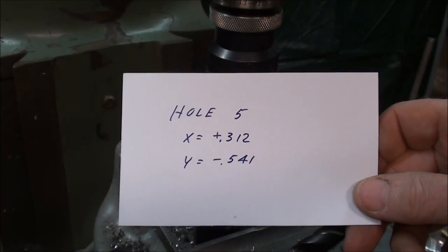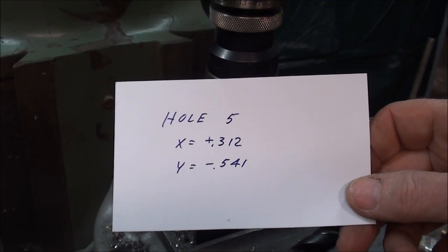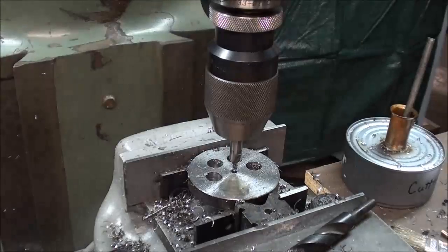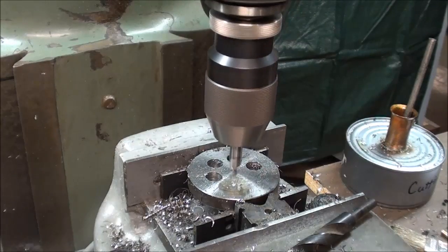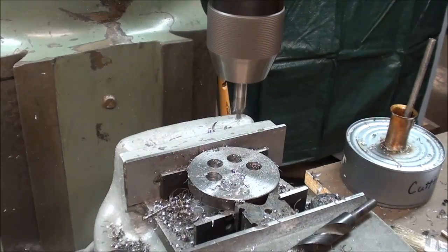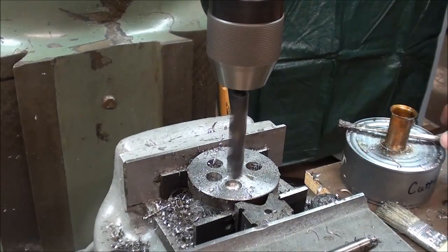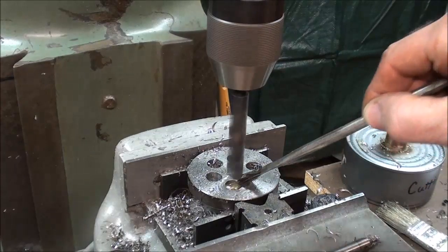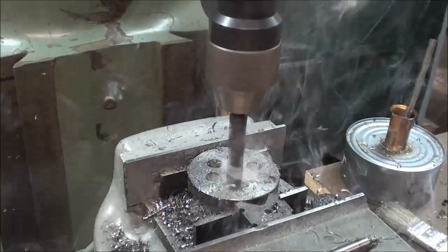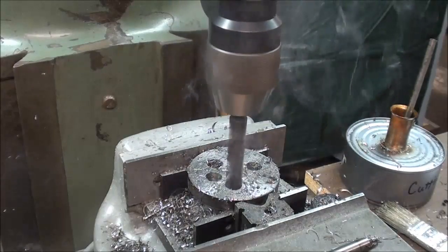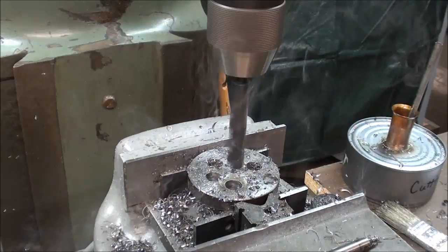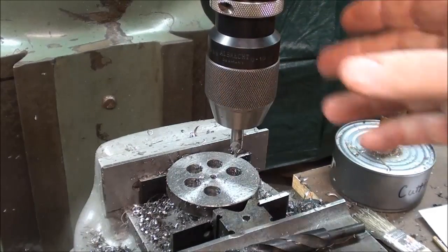Hole 5, I've reset the table. X equals positive 0.312 and y equals minus 0.541. For hole 5, I've reset the table. Be sure and watch my video where I make this spill proof oil can. I sure do like this keyless chuck.